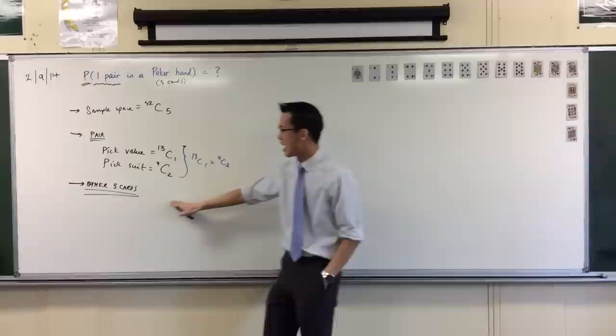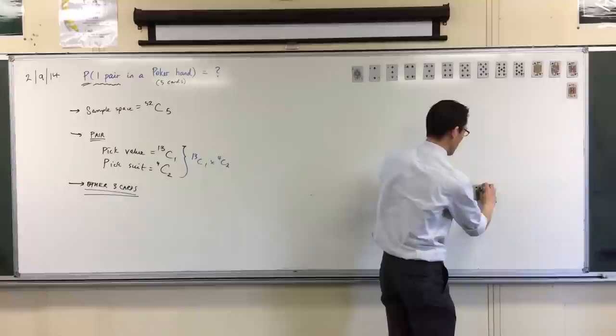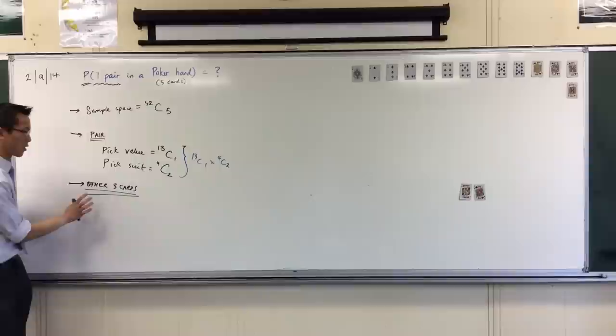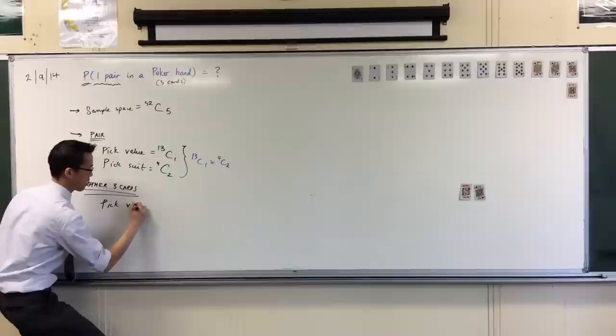But now that I'm picking another three cards, what restrictions do I have on this? Think carefully. I started with the kings. So, a couple of these, let's just take these two. These two are the pair that we've picked out. Now, I have to pick three more cards. Let's think about their values first.